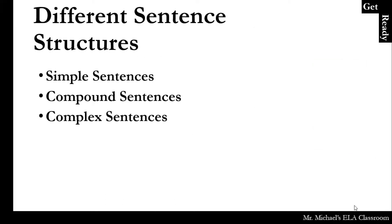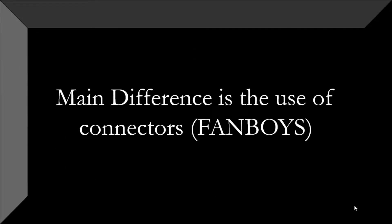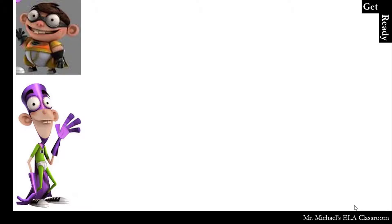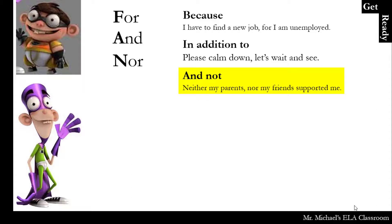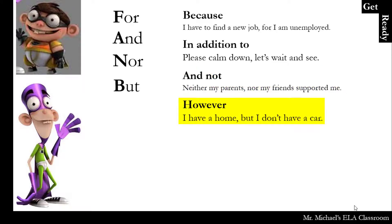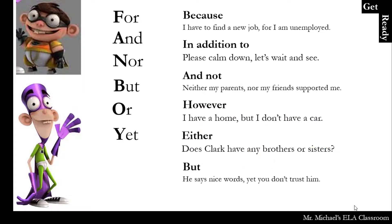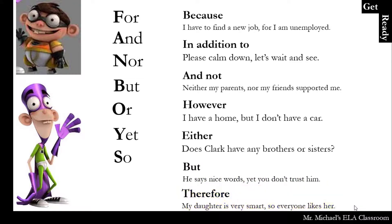So the different sentence structures: we have simple sentences, compound sentences, and complex sentences. The big difference in all of them is the use of connectors known as FANBOYS. For means "because"; And means "in addition to"; Nor means "and not"; But means "however"; Or means "either"; Yet means "but"; And So means "therefore." When you look at the first letter in each of those connecting words, it spells FANBOYS — that's why the acronym was created.